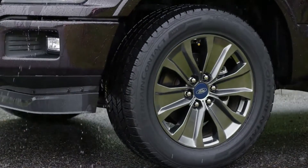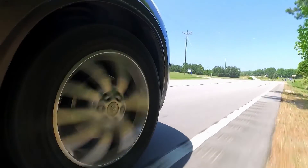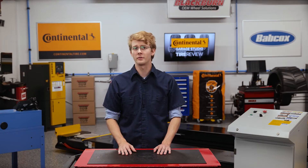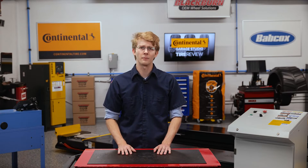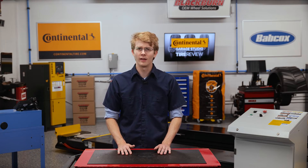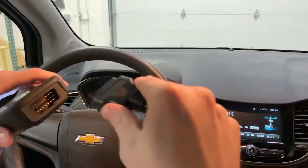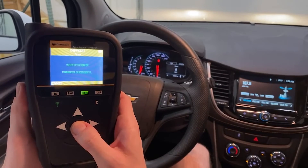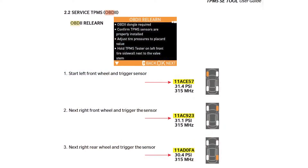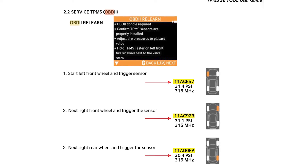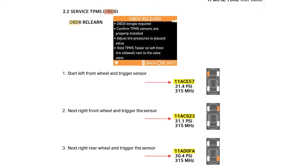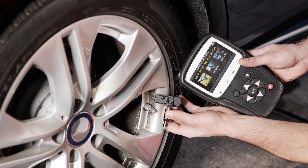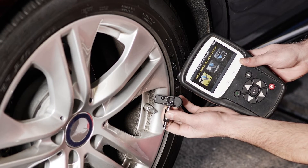A stationary relearn is when your technician puts the system in relearn mode through a series of OE-specified steps. Lastly, the OBD relearn uses a TPMS tool to connect the vehicle via OBD port to relearn the sensor IDs and their position in the control module.